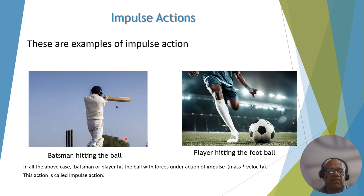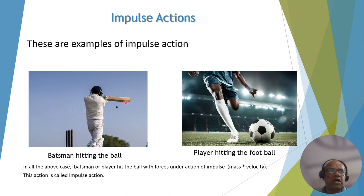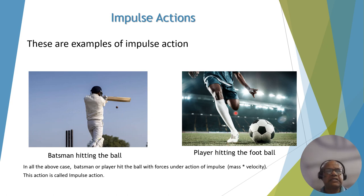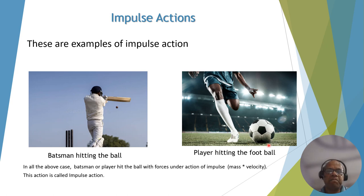Now we can clearly understand the phenomena. The batsman has mass of the bat and hits with velocity v. Mass of bat times velocity of bat creates momentum on the ball, and because of this the ball goes away. Similarly, the footballer's leg has mass and hits with velocity v, so mass times velocity creates impulse on the ball. This is a case of impulse action, and it is a one-time event.